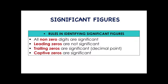Next, let's have the rules in identifying significant figures. First, all non-zero digits are significant — that means all numbers except zero are all significant. Next, leading zeros are not significant. When we say leading zeros, they are all zeros before the non-zero digit.